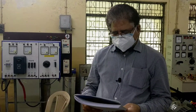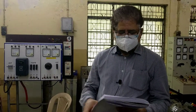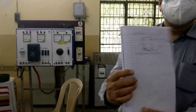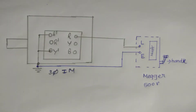Now for the procedure part, we refer to the connection diagram. As our motor carries six terminals, it means each winding is separate — that is the R phase winding, the yellow phase winding, and the blue phase winding. As per the procedure, when we measure the insulation resistance of one winding, the other two windings have to be shorted and connected to the earth.